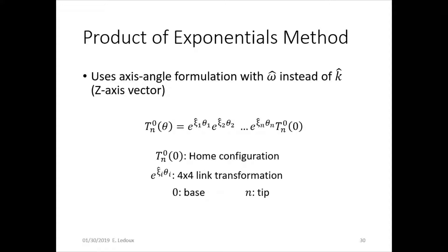The product of exponentials method is an alternative way to find forward kinematics of a complicated robot. It uses the axis angle formulation, but it calls omega-hat instead of the k-hat z-axis vector.